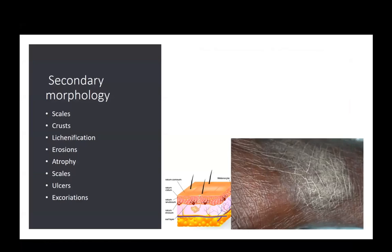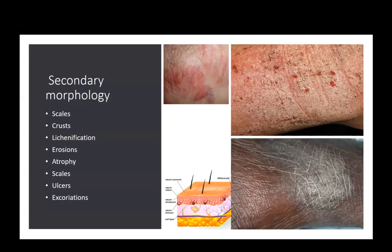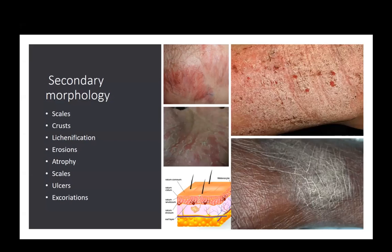There is also secondary morphology — modification of the primary lesion by either the environment or by the individual themselves. Common examples include lichenification or thickening of the skin with exaggerated skin line markings, excoriations with crusting and erosions, atrophy of the skin with thinning and visible underlying vessels and striae, and scaling or shedding of the stratum corneum.